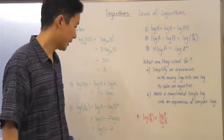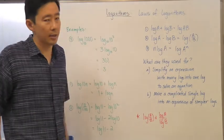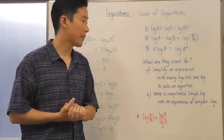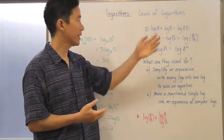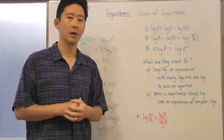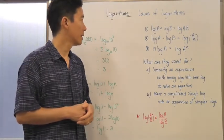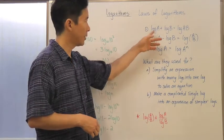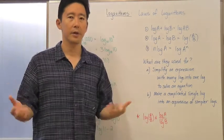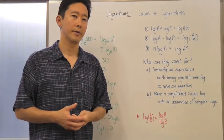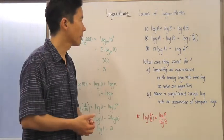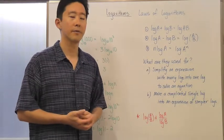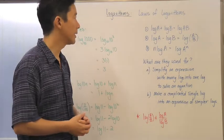Hello everyone. Let's go ahead and continue with logarithms and take a look at the laws of logarithms. There are basically three laws you need to remember. The first one says if you take the log of a plus the log of b, you get the log of a times b. I'm omitting the base here — let's use log base 10 for convenience, but of course this could be any base.